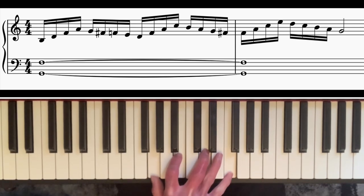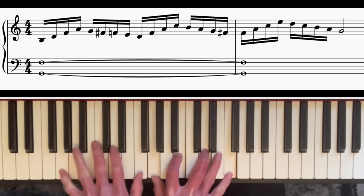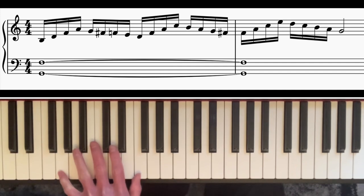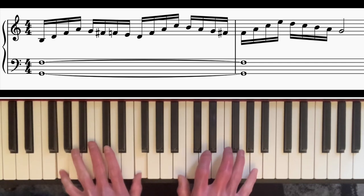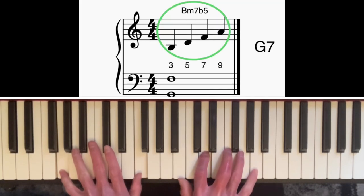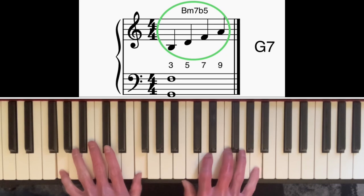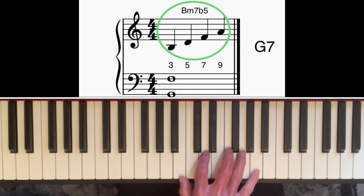I'm going to extract three arpeggios from that. In the left hand, I'm just going to play the root and the seventh. In the right hand, I'm going to play an arpeggio starting on the third of G7, going to the fifth, to the seventh, and then the ninth. Now, if you look at those notes on their own...